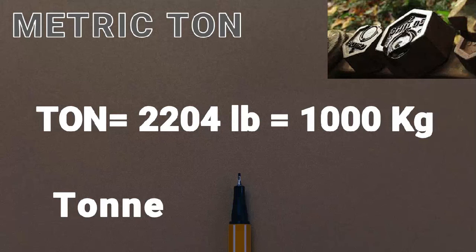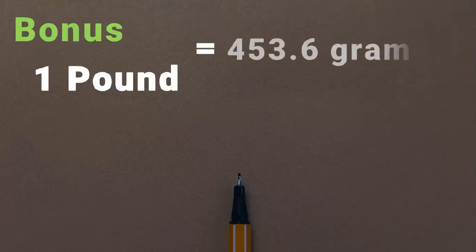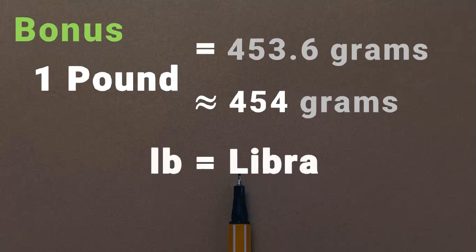It is also called the metric tonne. Lastly, 1 pound is exactly 453.6 grams, or approximately 454 grams of mass. Always remember that pounds is denoted as 'lb' because it is derived from the Latin word 'Libra', meaning a scale.